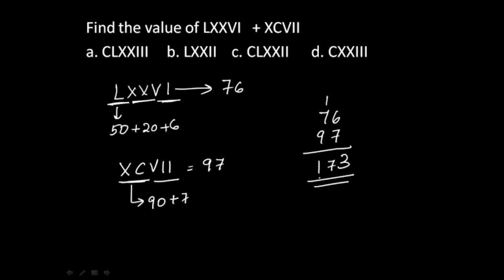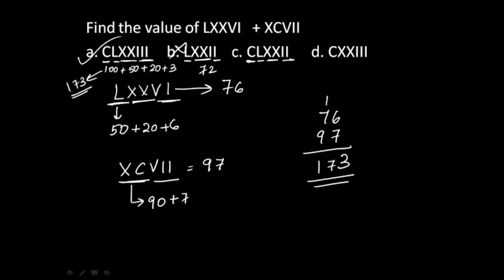What is the Roman numeral representation of 173? Looking at the options: C is 100, L is 50, then XX is 20, and 3 — so 100 + 50 + 20 + 3 = 173. Option A represents 173. Option B is 50 + 20 + 2 = 72, wrong. Option C is 100 + 50 + 20 + 2 = 172, wrong. Option A is the correct answer.